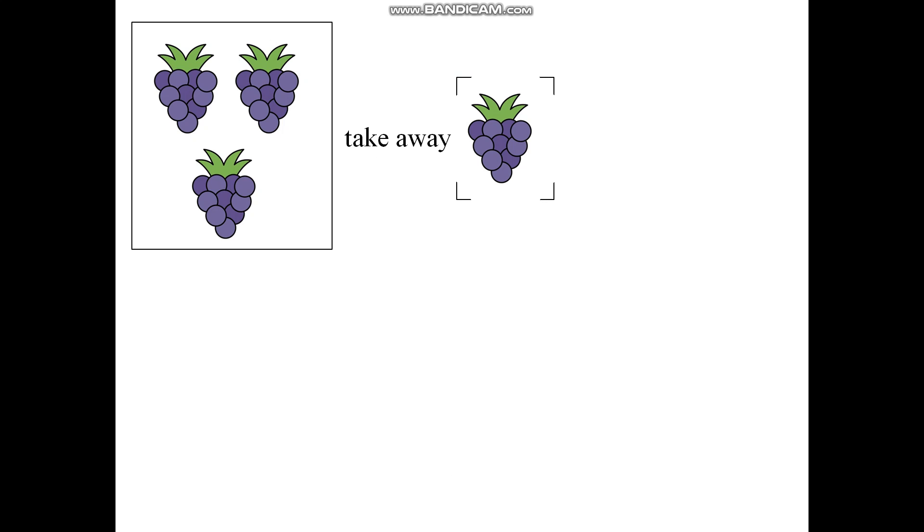Take away one. So, I take away one group of grapes. It will give me how much? It will give me two. Now, how can I write this in words? I can say,